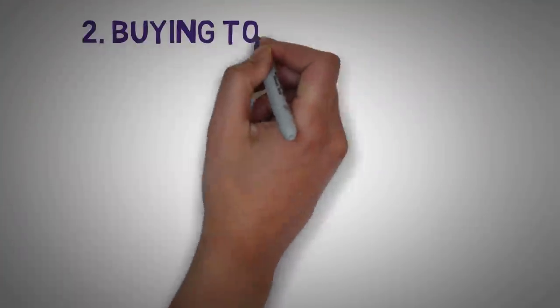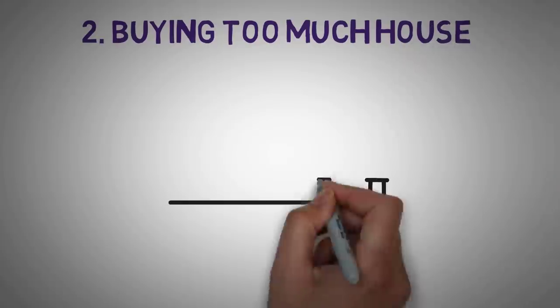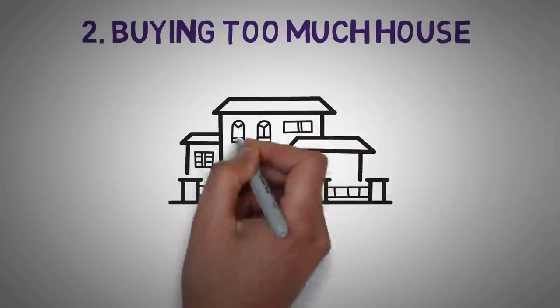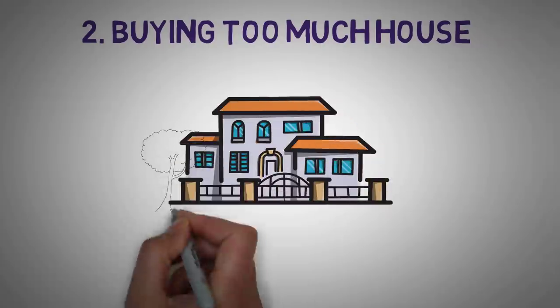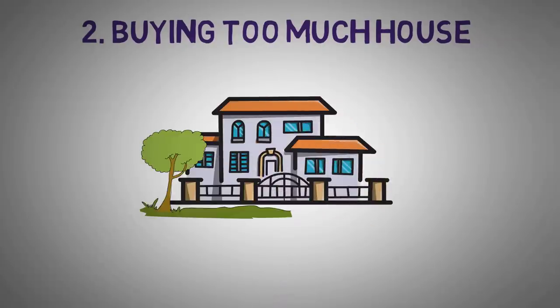Number 2. Buying too much house. It's easy to fall in love with a beautiful new house with the kitchen of your dreams and more space than you'll know what to do with. The stately curb appeal and sprawling backyard is sure to impress.